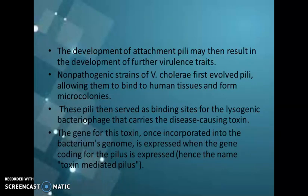Next is about the development of attachment fimbria. Attachment of fimbria may result in the development of further virulent strains. For example, non-pathogenic strains of Vibrio cholerae first evolved fimbria, allowing them to bind to human tissues and form micro-colonies within human tissue. Thus, the bacteria became pathogenic. This Vibrio cholerae then serves as a binding site for lysogenic bacteriophages that carry disease-causing toxins.